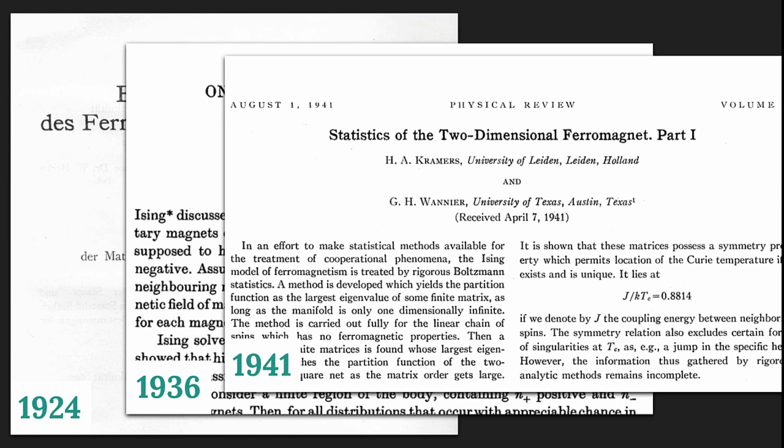But it wasn't until 1941 that Cramers and Vanier found the exact critical temperature of the 2D Ising Model. Let's first see what Peirels came up with.